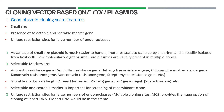Why does small size act as a good feature? The advantages of small size plasmids are: they are much easier to handle, more resistant to damage by shearing, readily isolated from the host cell, have a low molecular weight, and small size plasmids are usually present in multiple copies.